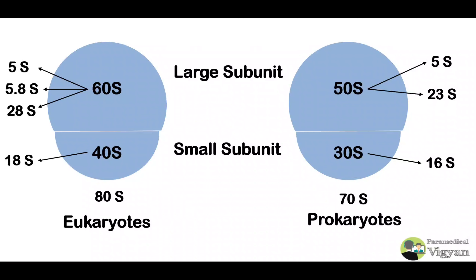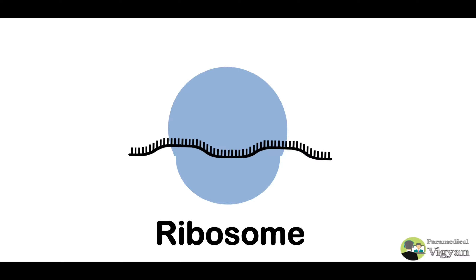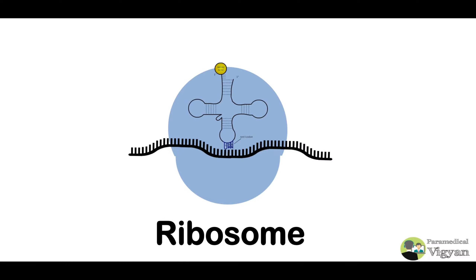The remainder of the ribosomal units are proteins — you will find proteins such as S1, S2, S3, and so on. Now, regarding the ribosome structure: this is the mRNA strand. As you can see, there is a strand — this is the mRNA strand running through the ribosome.